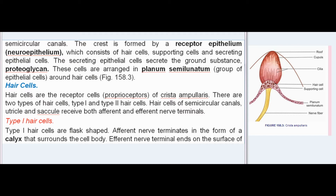Hair cells are the receptor cells (proprioceptors) of the crista ampullaris. There are two types: Type I and Type II hair cells. Hair cells of the semicircular canals, utricle, and saccule receive both afferent and efferent nerve terminals. Type I hair cells are flask-shaped; the afferent nerve terminates in the form of a calyx surrounding the cell body, and the efferent nerve terminal ends on the surface of the calyx.